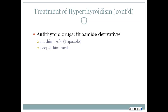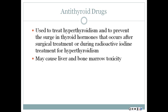Antithyroid medications can also be used. This class of drugs is known as thiamide derivatives, and they work by inhibiting iodine molecules from being incorporated into the amino acid tyrosine, which is required to make the precursors for T3 and T4. The most serious adverse effects of antithyroid drugs are liver and bone marrow toxicity. These drugs are used to treat hyperthyroidism and to prevent the surge in thyroid hormones that occurs after surgical treatment or during radioactive iodine treatment. Table 31-4 on page 505 lists common side effects for these drugs.